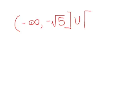So, writing this answer out once again, we have negative infinity to negative square root of 5, bracket, union, bracket, positive square root of 5, all up to positive infinity.